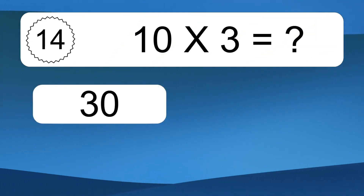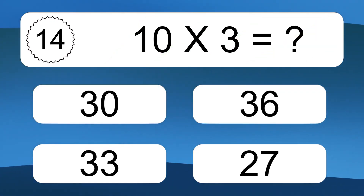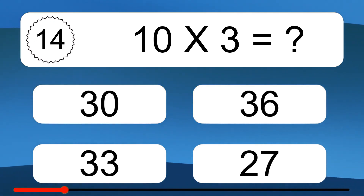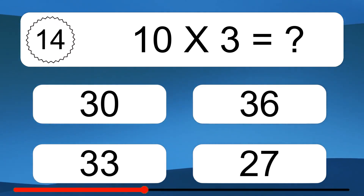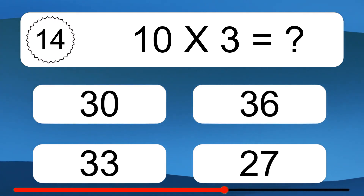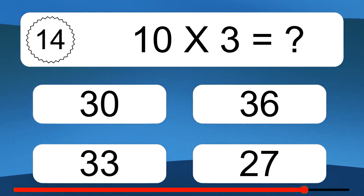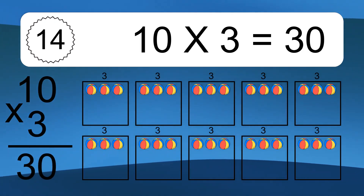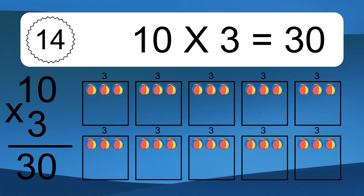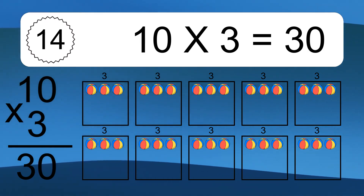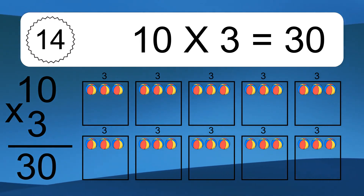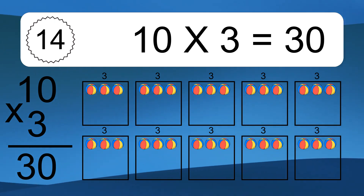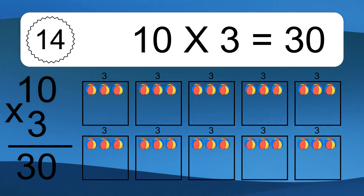10 times 3 equals what? 10 times 3 equals 30. We have 10 boxes, and each box has 3 colorful balls inside. If you count all the balls in all the boxes together, you will have 10 times 3 balls. This equals 30 balls.